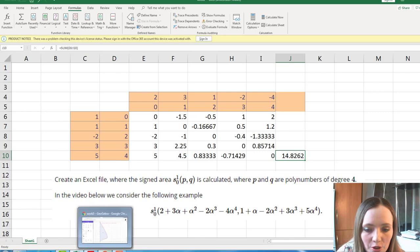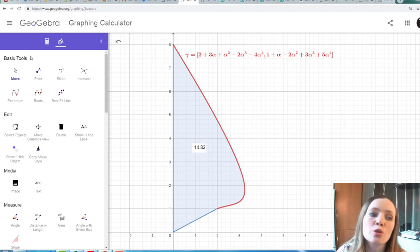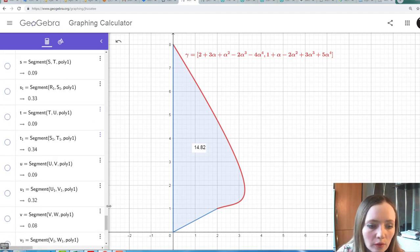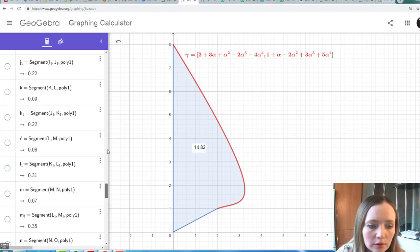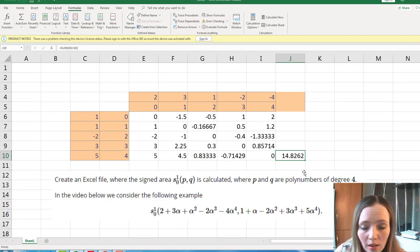Now let me show you that the answer is in fact correct. If you enter this gamma into GeoGebra here and calculate the signed area from 0 to 1. This blue area is the signed area. We will get this value 14.82. So our answer is correct.